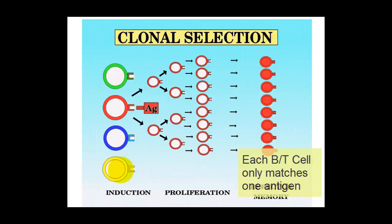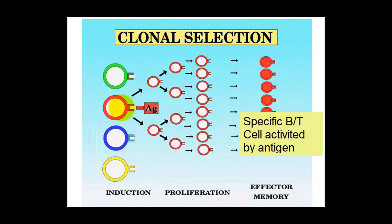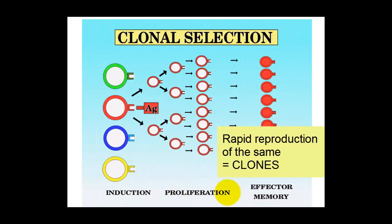These B or T cells are only activated when the antigen's present. And when the antigen's present, we have this big and very quick reproduction of these cells. They become very active very quick, and that's called proliferation.